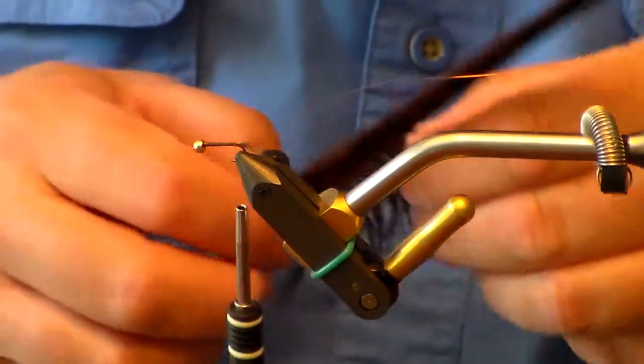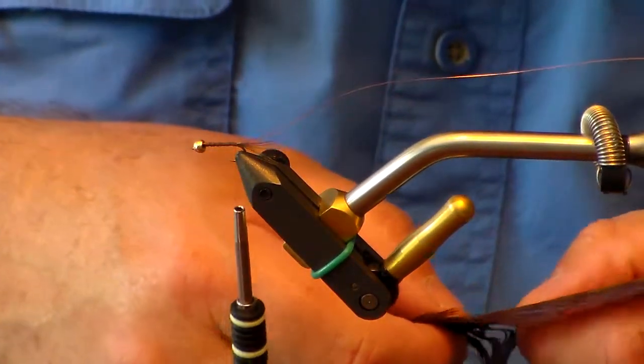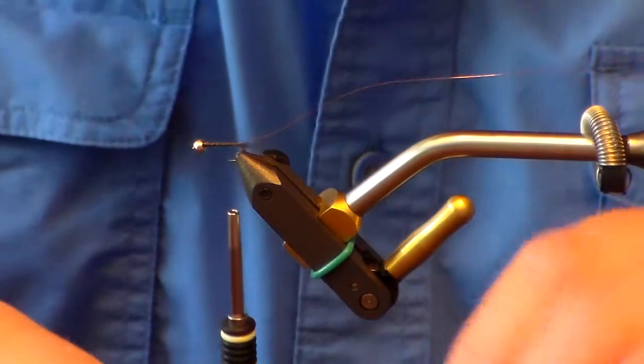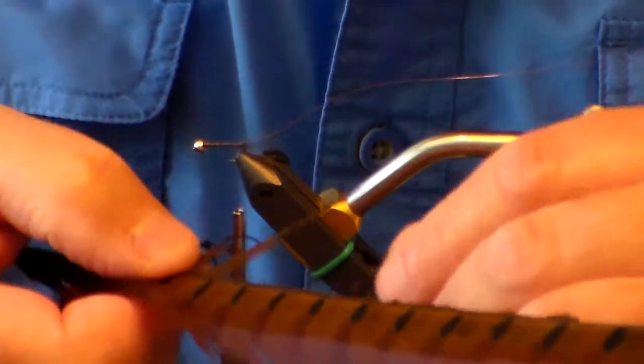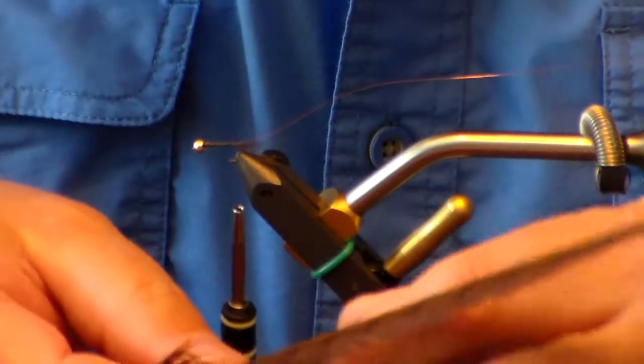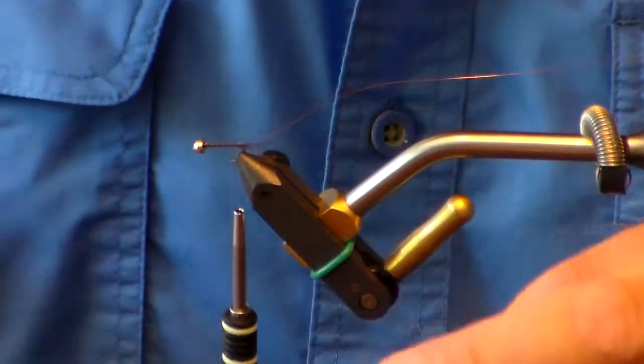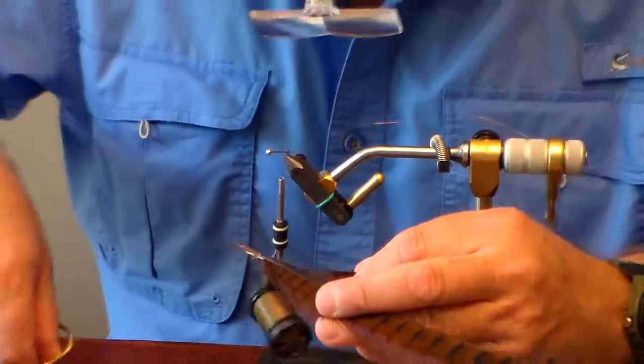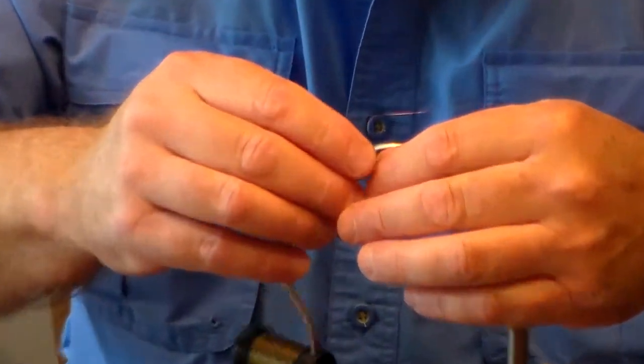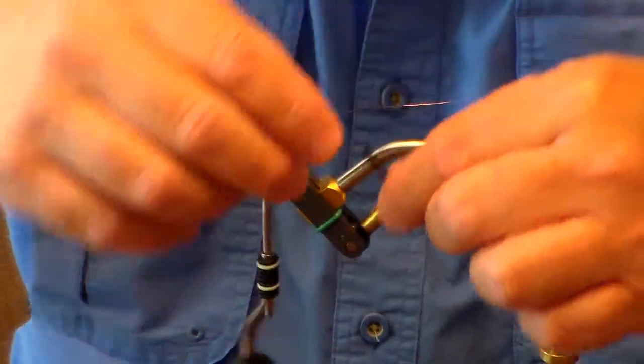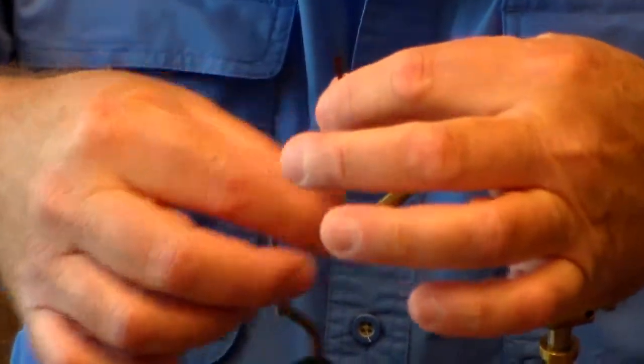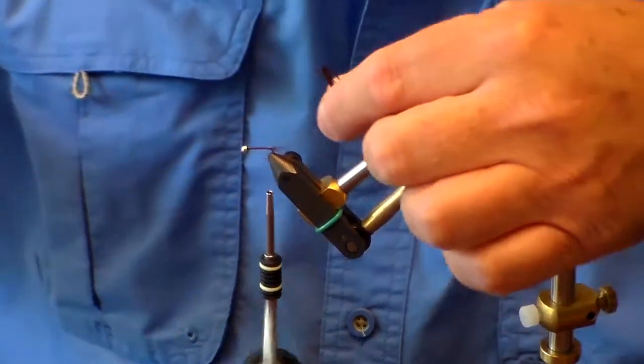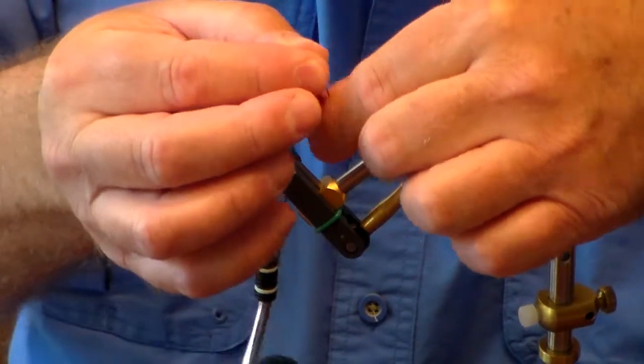Now you want to take about eight or ten pheasant tail fibers. If you make sure that you pull all of the tips together, then you can pull those off, or I like to cut them off. And then always make sure you cut your tips off, because they're brittle. So just cut your tips off, and then tie it in by the tips.